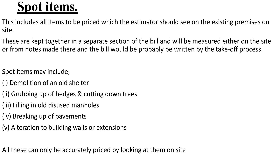The next item is spot items. Spot items are items to be priced which the estimator should see on the existing premises. This is usually before we do the construction. They are items on the construction site — for example, old shelters, hedges and trees, manholes, and breaking up pavements. All these things we need to remove, and because it will cost some extra money, they are usually written in a separate section of the bill. They are calculated either from notes that are given or when the estimator goes to site, and then the total sum is entered in the BQ as spot items.